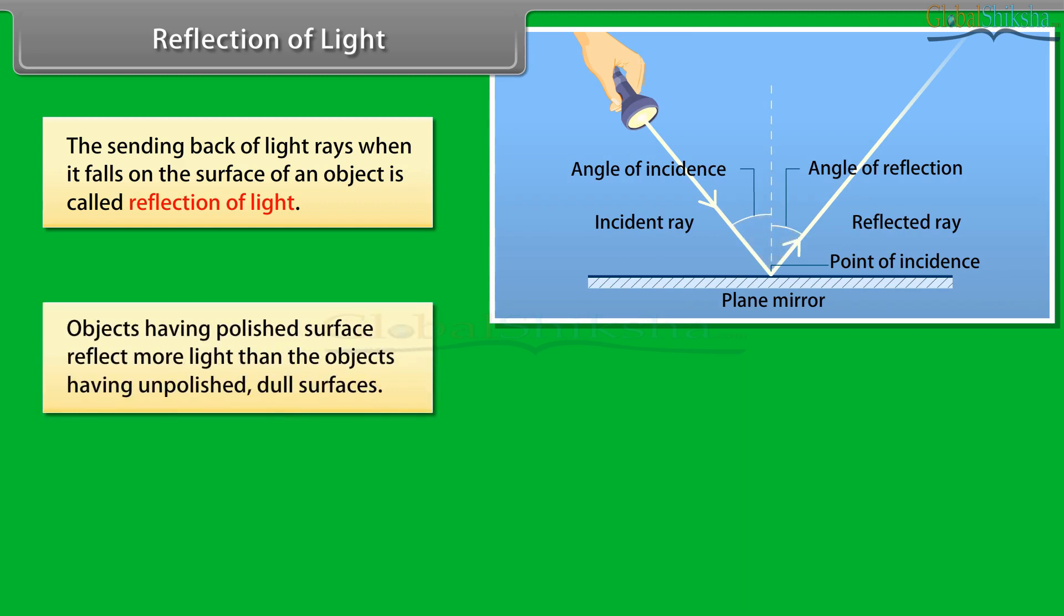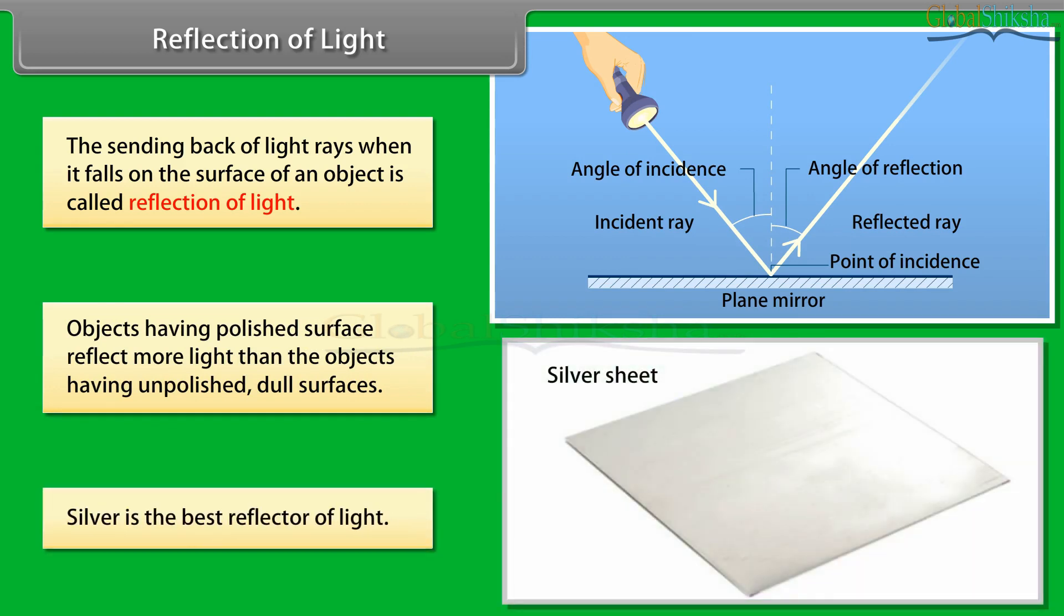Objects having polished surface reflect more light than the objects having unpolished dull surfaces. Silver is the best reflector of light.